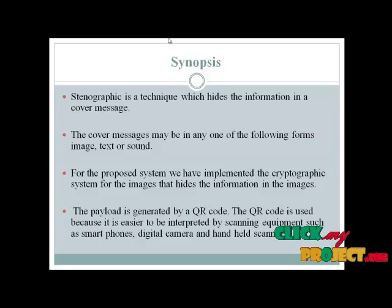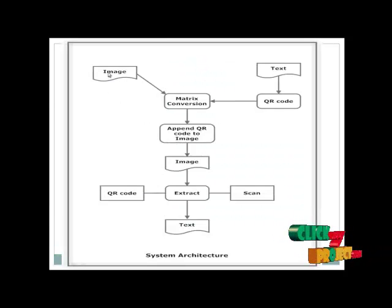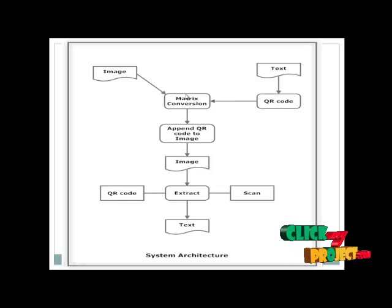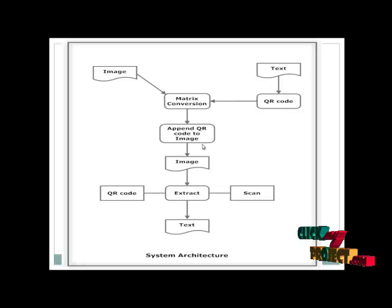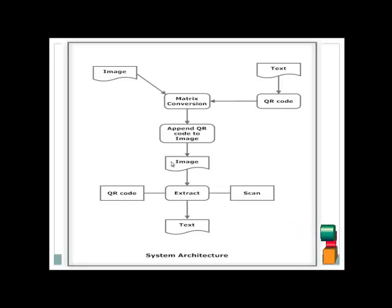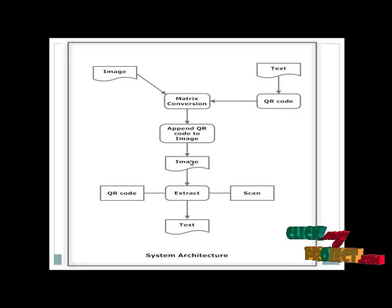Let us see the flow diagram. The input is the image. We convert it to a matrix conversion for the QR code or text for the images. We append the QR code to the images. The matrix conversion encodes the images and appends to the QR code. The QR code is the output image.